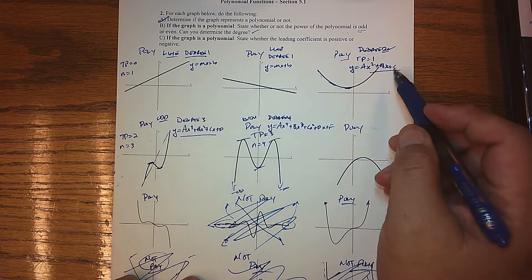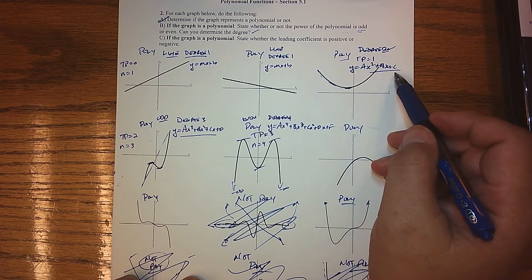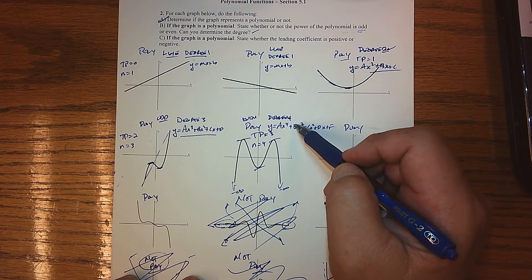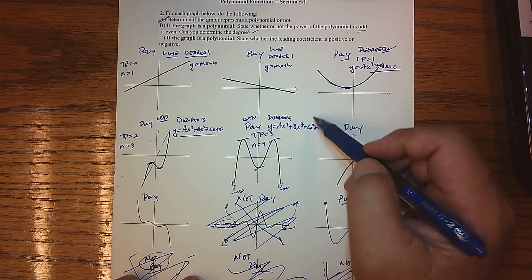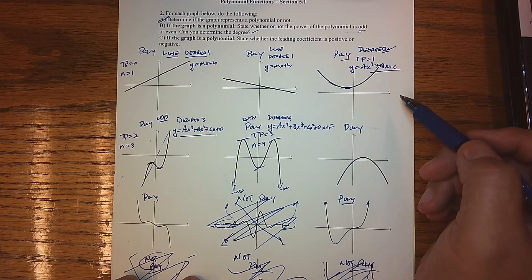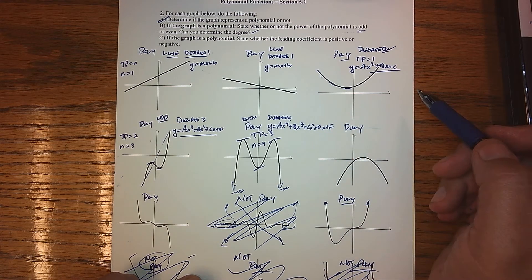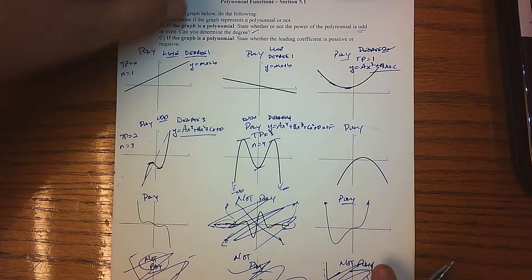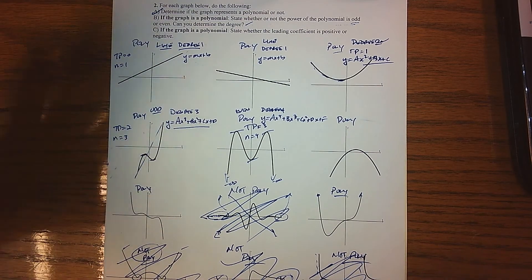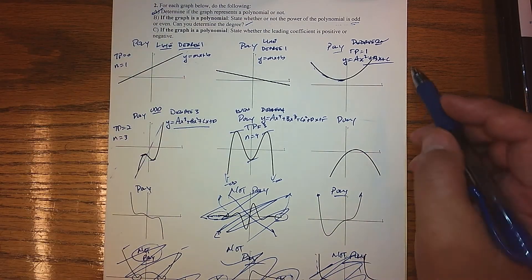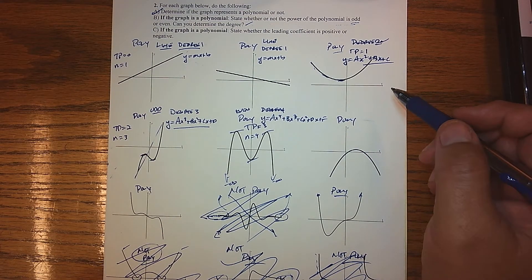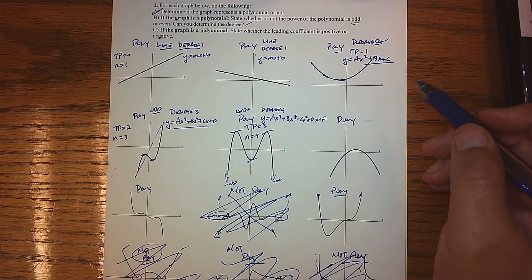I just realized I'm using a, b's, and c's. We could have used a sub four, a sub three, a sub two, a sub one, a sub zero. Sorry, I got a little lazy there — just because we have a limited number of coefficients. Maybe I should have been consistent, but both notations are okay.